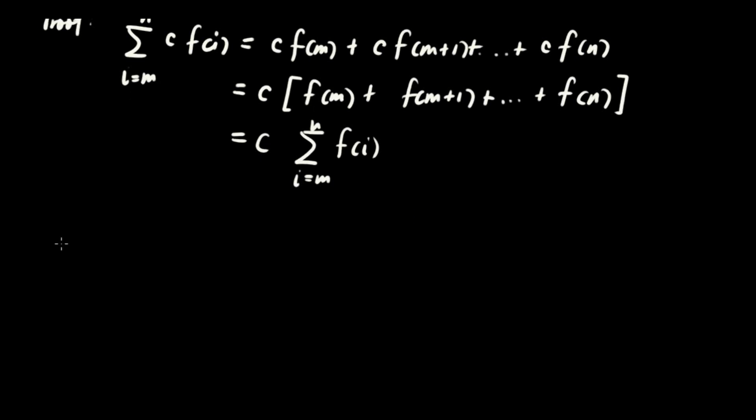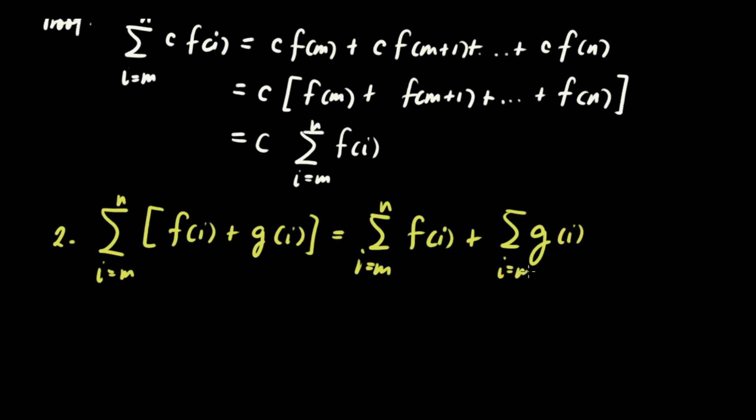Let's have the second one. Second one is the summation of f of i plus g of i from i equals m to n is equivalent to ito. So parang pwede mo i-distribute yung sigma notation. So you have summation of f of i as i runs from m to n plus the summation of g of i as i runs from m to n.